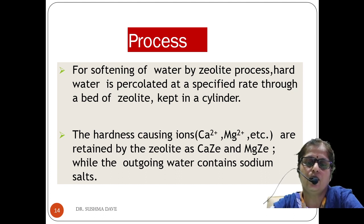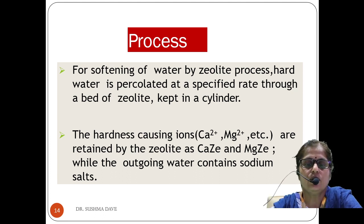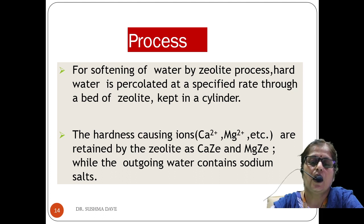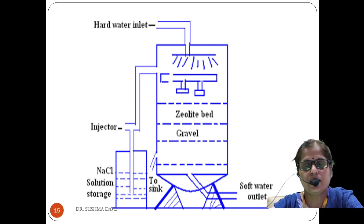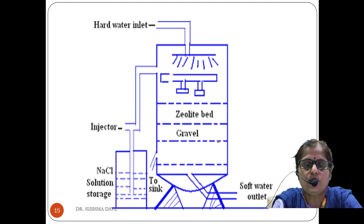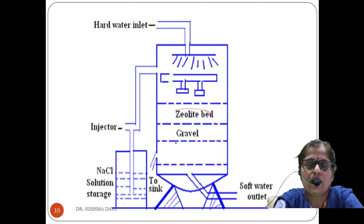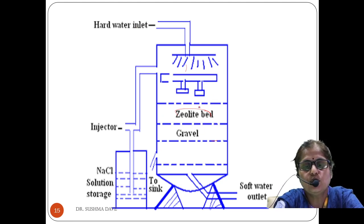For the softening process, hard water is percolated at a specified rate through zeolite kept in a cylinder. The hard water containing calcium and magnesium ions is retained by zeolite as calcium zeolite and magnesium zeolite, while the outgoing water comes out as sodium salt. In the apparatus, a vertical cylinder has a layer of gravel on a wire mesh at the bottom to support the zeolite bed. Hard water passes through the zeolite bed and soft water is collected at the lower outlet.